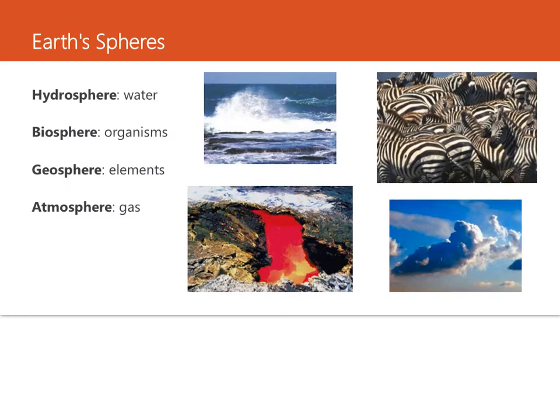So everything in the Earth's system operates within these four major systems. The hydrosphere, the biosphere, the geosphere, and the atmosphere. So let's look at the hydrosphere. The hydrosphere is made up of all the water on the planet. This includes water in the solid, liquid, and gas forms. The ocean is part of the hydrosphere, and most of the water on Earth is stored in the ocean.